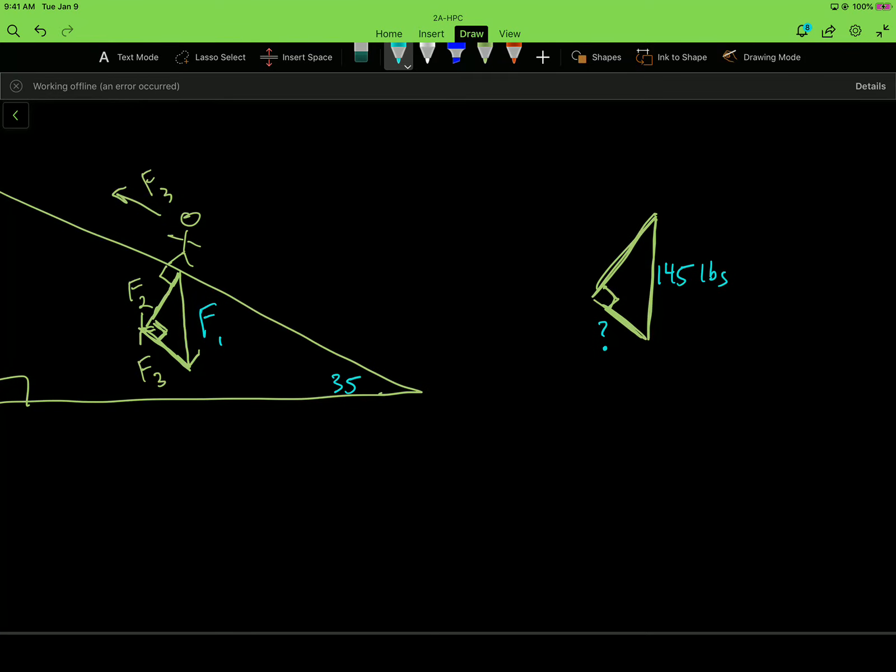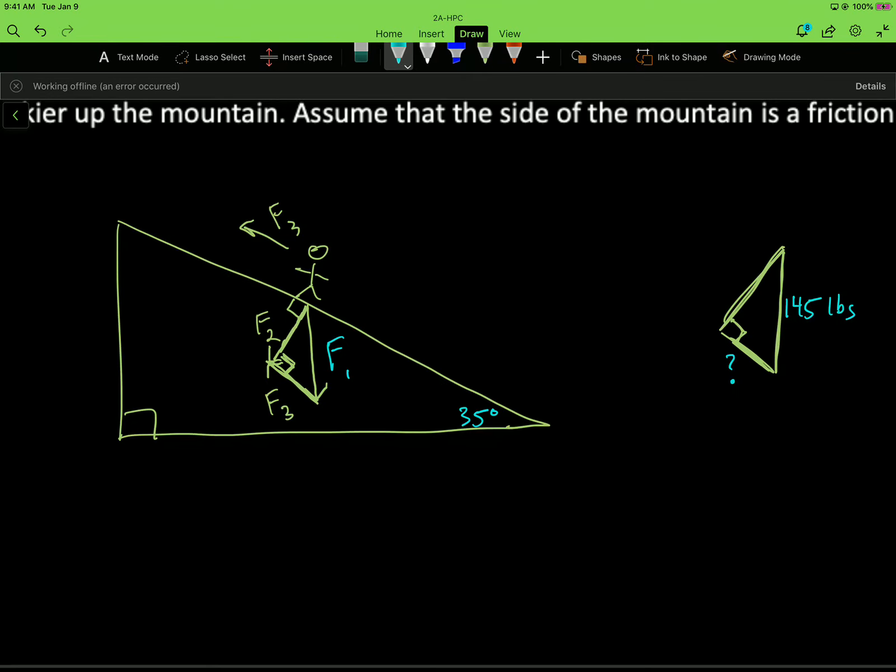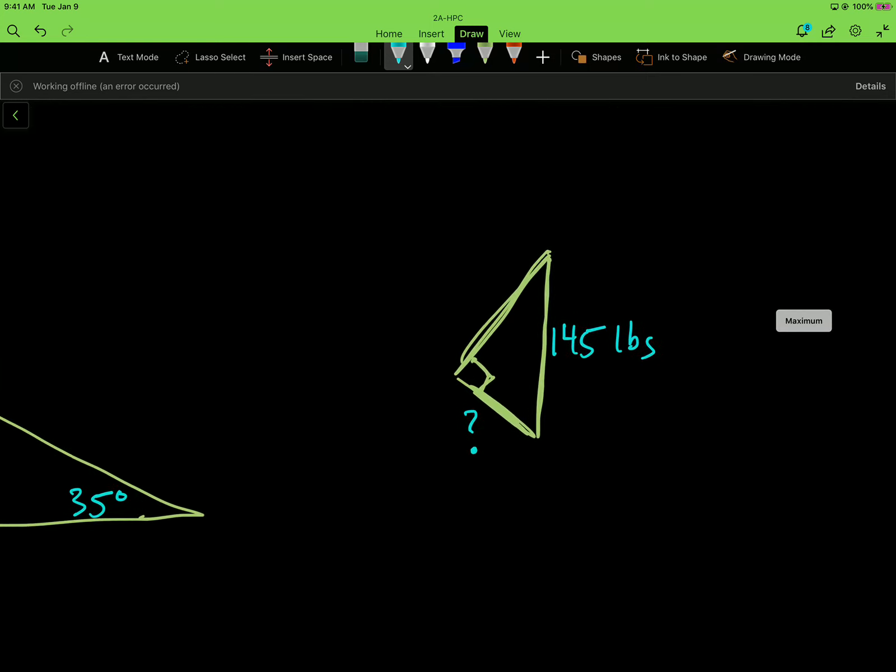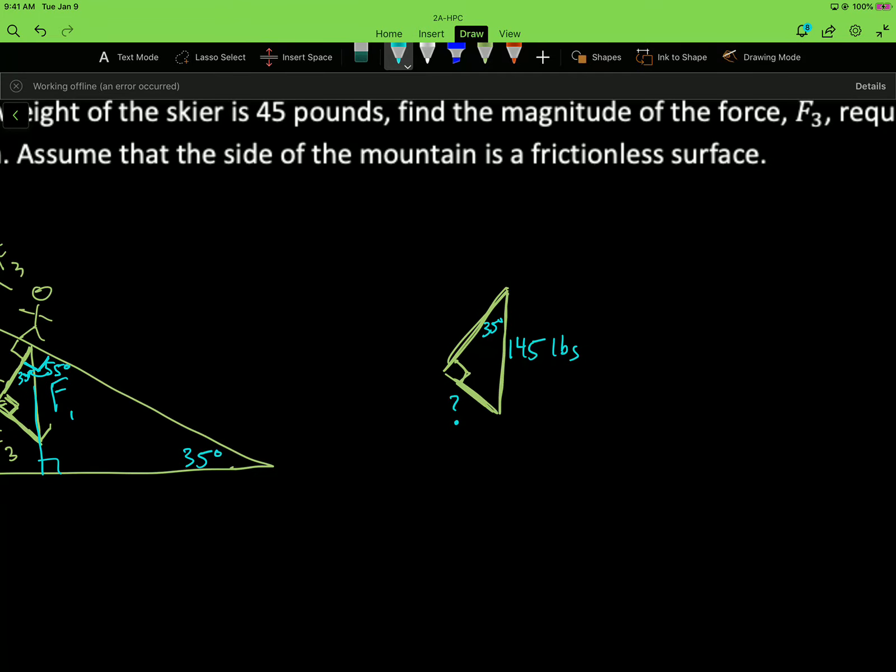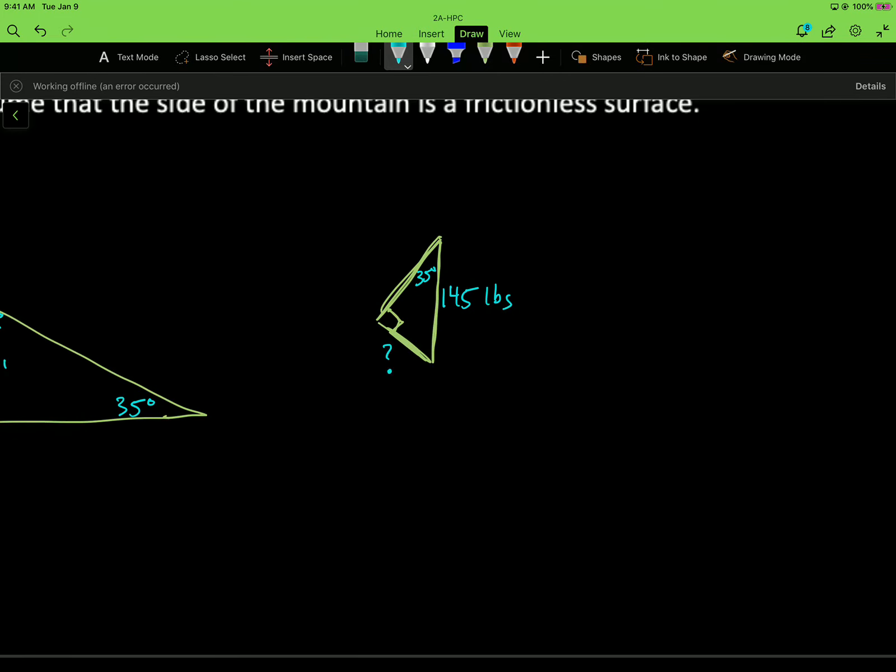So if this is 35 degrees, these are similar triangles. So what happens is, I know that this part here is 90. And if I continue this triangle down, I know that 90 minus 35, the complement of 35, is this angle in here, 55 degrees. And then I know that's complementary again with this angle. So we're back to 35 degrees. So I know that this angle right here is 35 degrees.